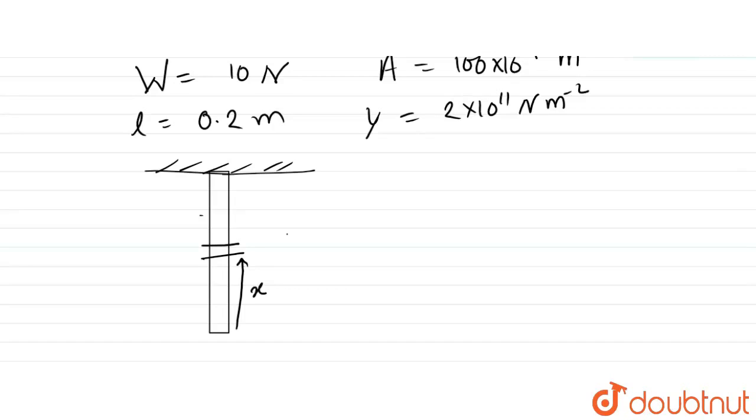Let's consider the elongation at height x. At distance x from the bottom, the load is only from the weight of the lower portion of length x, which is W/l times x. For a small element of length dx, the change in length dl is the strain times dx.